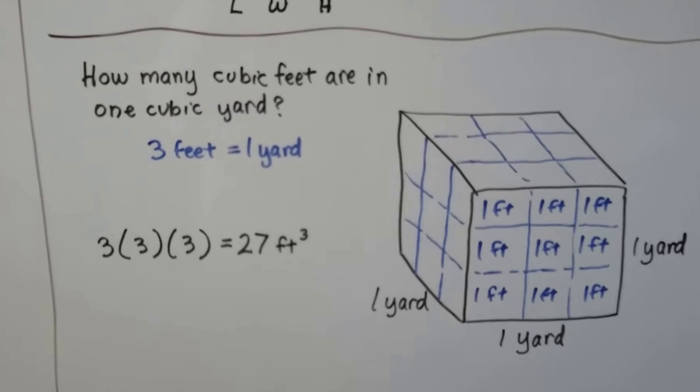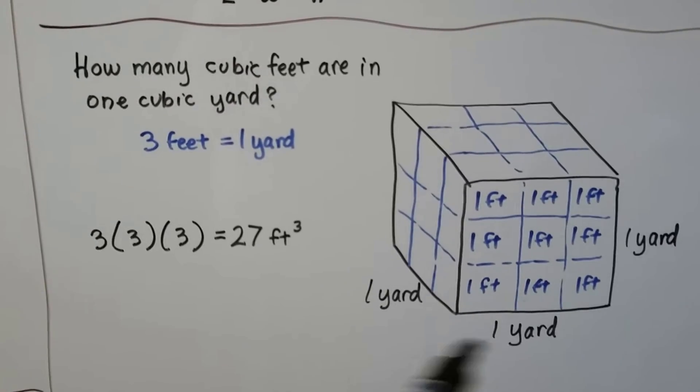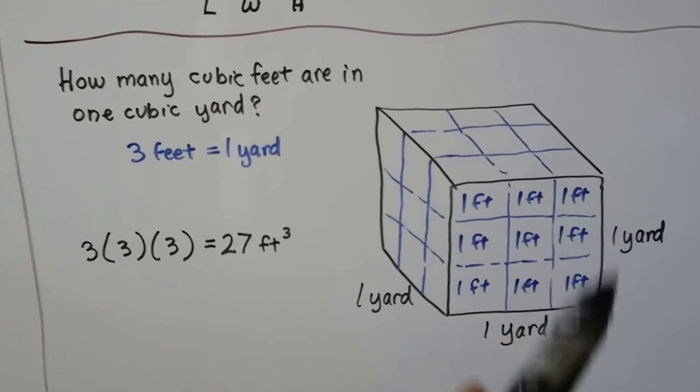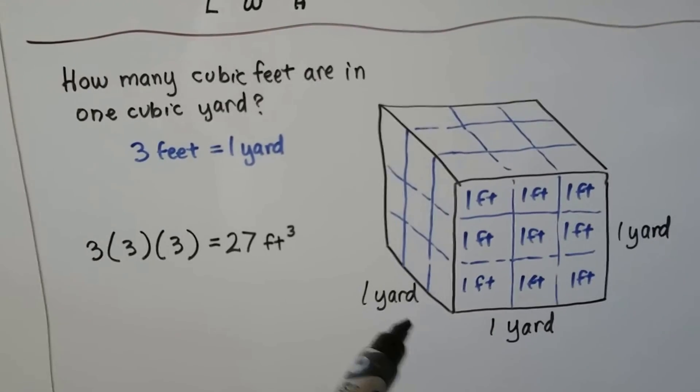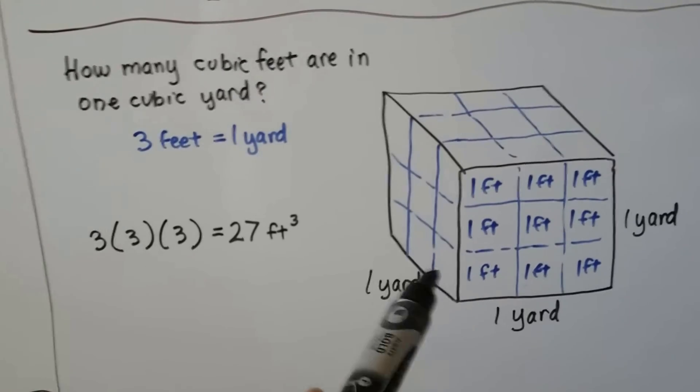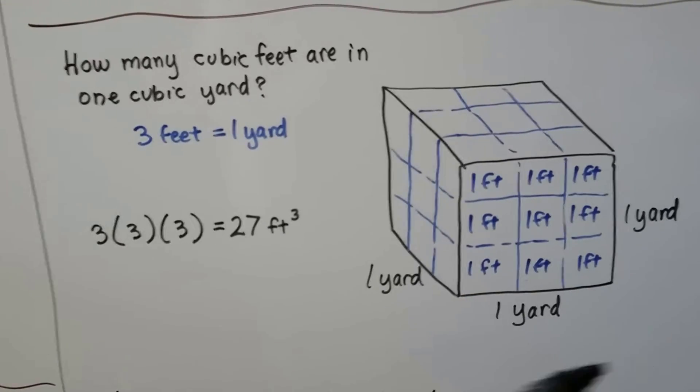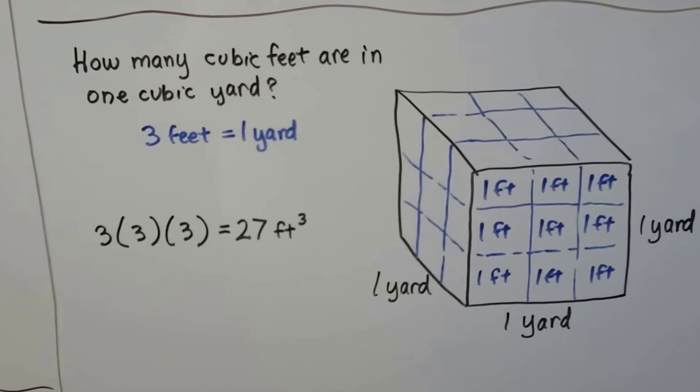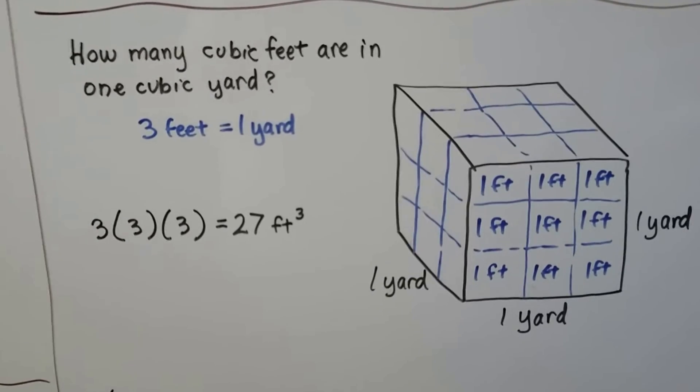How many cubic feet are in one cubic yard? Well, one yard, one yard, and one yard, that would be a cubic yard, and there's three feet in one yard. So that means there's three feet every single direction. So that means we have 3 times 3 times 3. That would be 27 feet cubed.